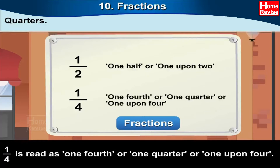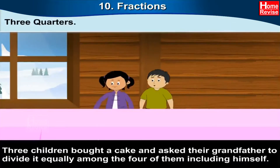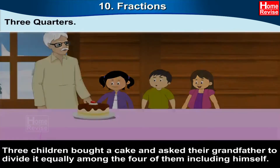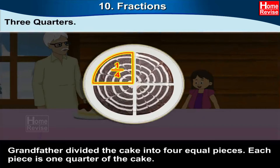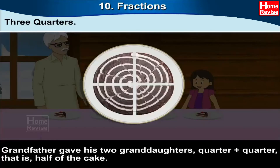One quarter, or one upon four. Three quarters — three children bought a cake and asked their grandfather to divide it equally among the four of them including himself. Grandfather divided the cake into four equal parts; each piece is one quarter of the cake. Grandfather gave Raju, Rani, and Pinky one quarter each and kept the last quarter for himself.